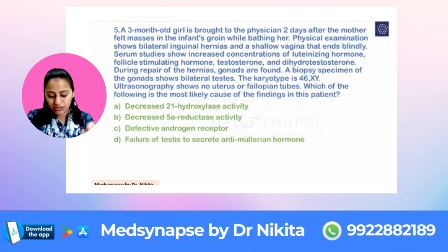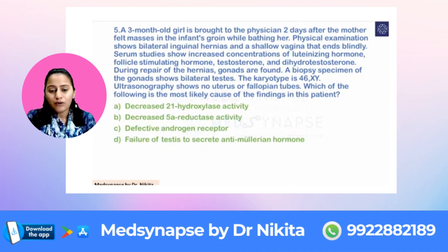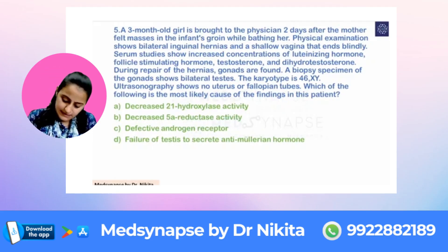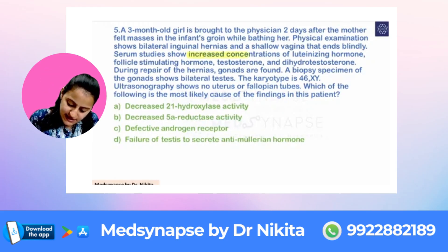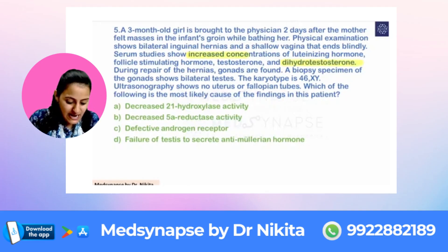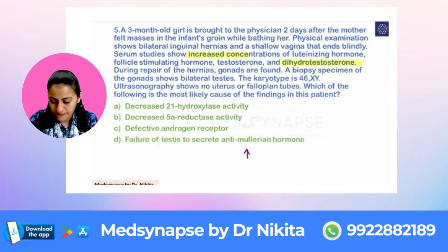The DST question asks: what is the major clue in this question to help you answer it? The major clue is there is increased concentration of LH, FSH, testosterone, and even dihydrotestosterone.